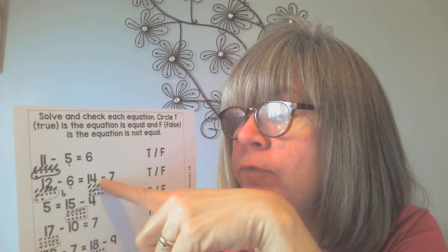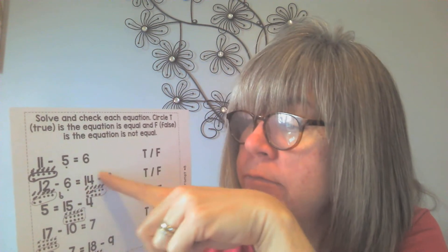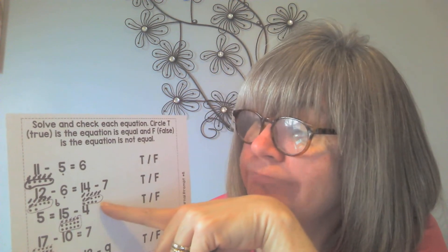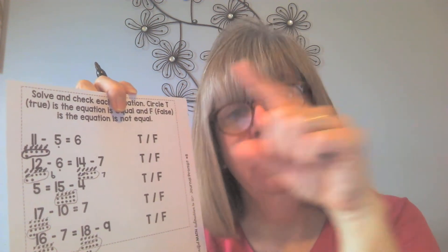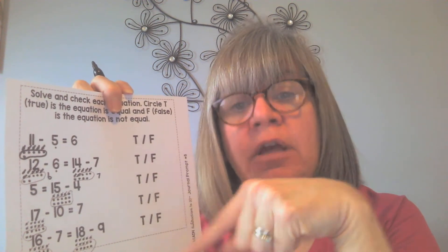Now we do 14 take away 7. I drew 14 dots and crossed off 7. Maybe you knew the answer — 14 take away 7 is the double in the 14 family. Count the dots: 1, 2, 3, 4, 5, 6, 7. So 14 take away 7 equals 7. See how 7 plus 7 equals 14 — the adding and takeaway questions are related because they use the same numbers.